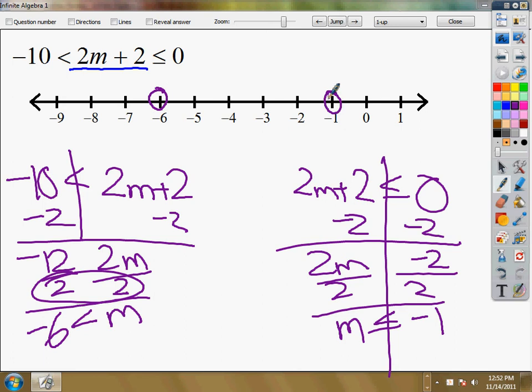In this case, I've got m is greater than negative 6 so I don't fill it in but I do shade. And the other one is less than or equal to negative 1. Well, I can fill this right in and then go down and shade it in nicely.